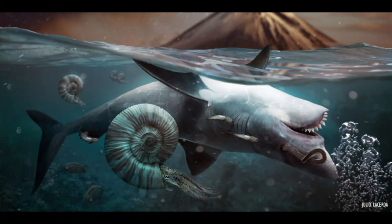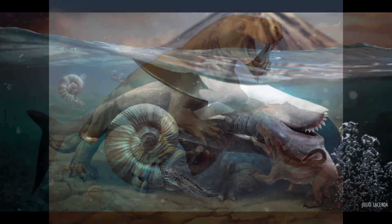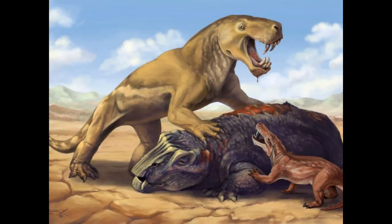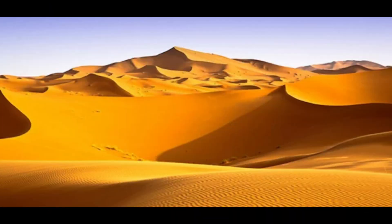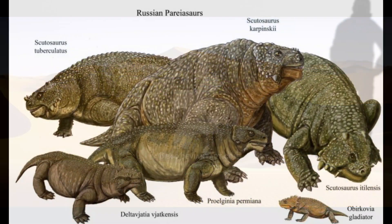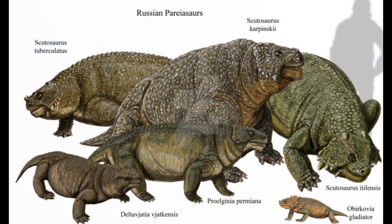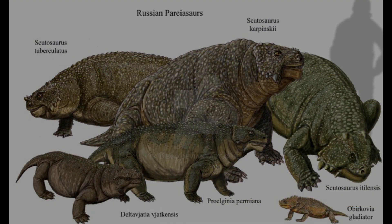It killed 9 in 10 marine animals and 7 in 10 land animals. The Permian extinction is the worst of the five mass extinctions. Nearly all of life was wiped out, and entire branches on the Tree of Life were ripped off.